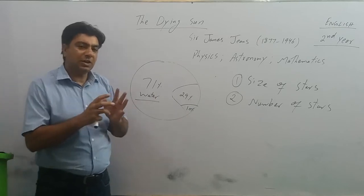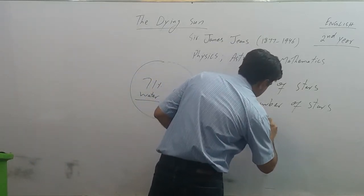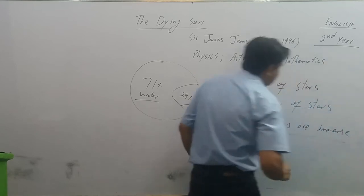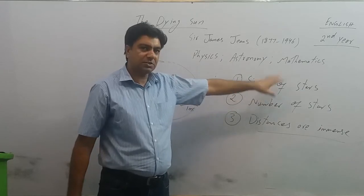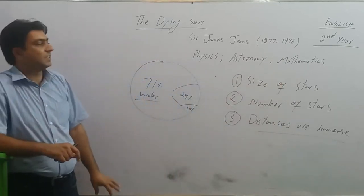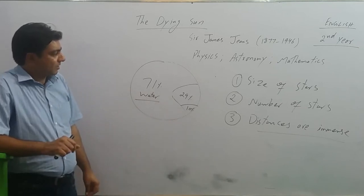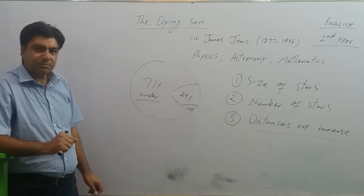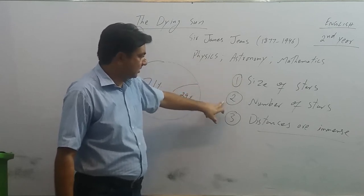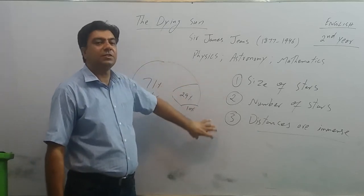Stars are far away from each other, so distances are immense. These three facts we have got of our universe: size of stars - stars are very big; number of stars - so many; distances are so big. This gives us an idea of the size of our universe. Today we have discussed about the size of stars, number of stars, and distances between the stars. This gives us an idea of the vastness of our universe.